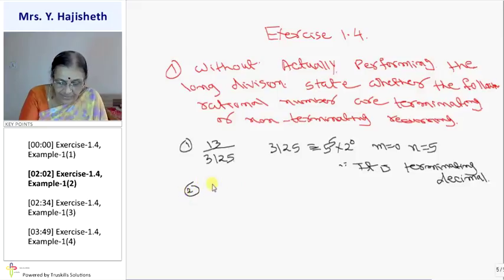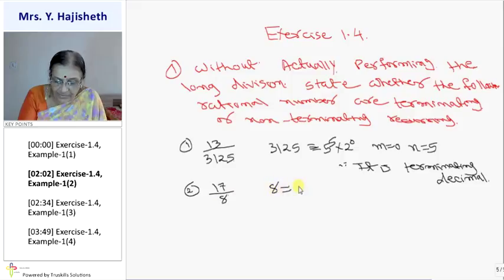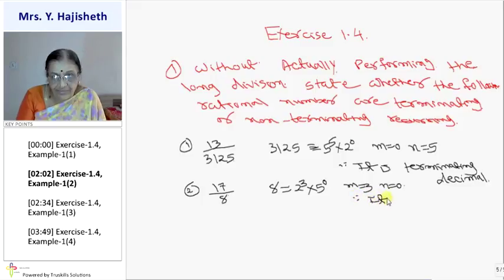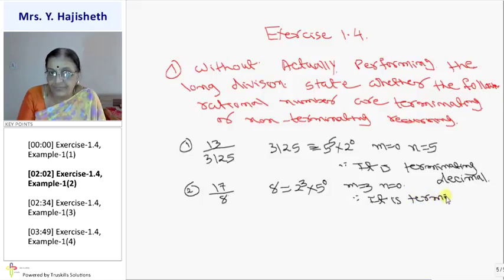The second sum is 17 by 8. We know 8 can be expressed as 2 cube, and 5 raise to 0. So m is 3, n is 0. Therefore 17 by 8 is a terminating decimal.